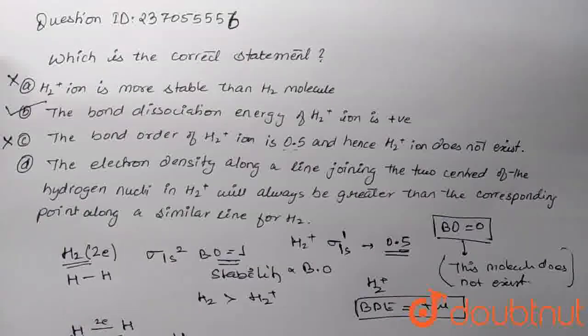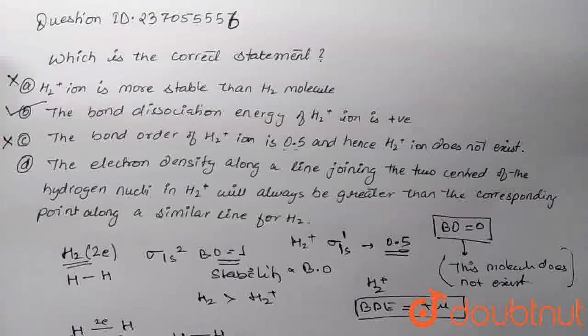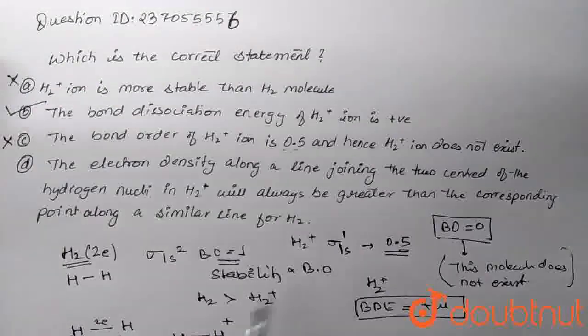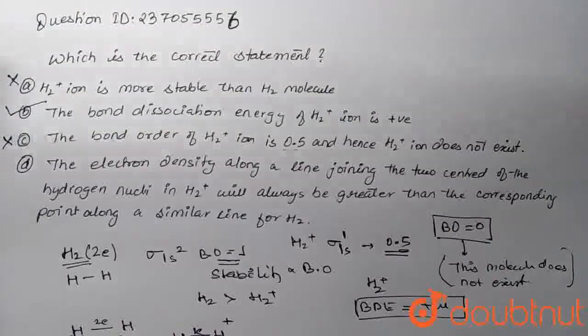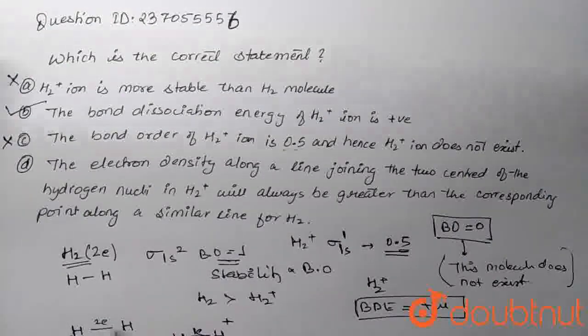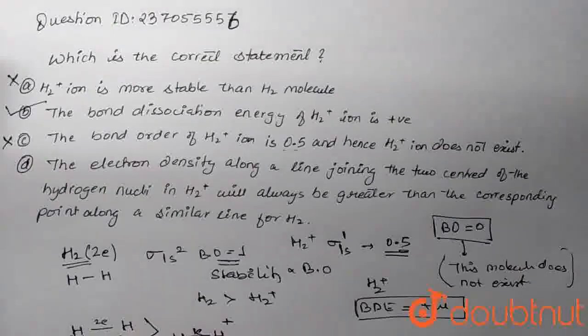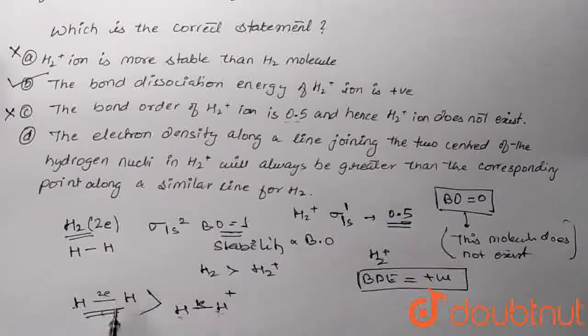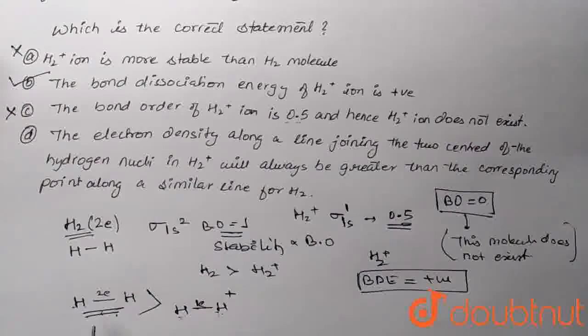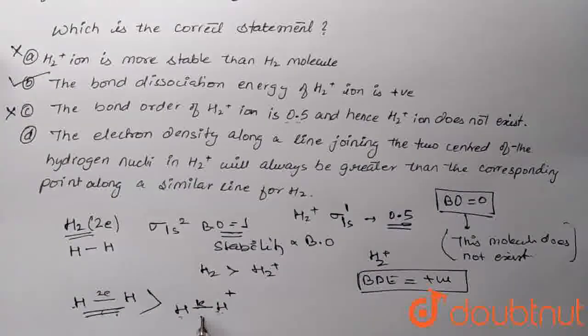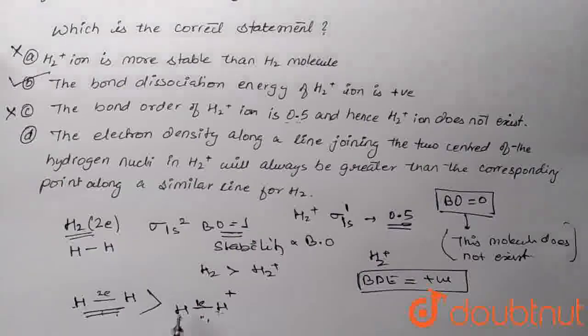So then we will talk about H2 plus. H2 plus means that one of the two electrons is now missing. So here is only one electron and two nuclei. Here are two nuclei and two electrons, so electron density is here. Because there are two electrons, electron density is here. Because there are two electrons and here is only one electron, so electron density is more there.